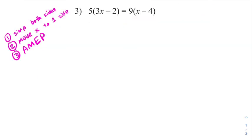Moving on to number three, we'll see a problem where we actually do have to do all three steps. So on this left side, I need to distribute to simplify that side. So I'm going to distribute and get fifteen x minus ten. I'm also going to need to distribute on this right side, giving us nine x minus thirty six.